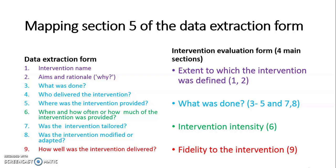We categorised these 9 areas into 4 main sections for our intervention quality assessment instrument. The extent to which the intervention was defined was mapped to items 1 and 2 of the data extraction form. What was done was mapped to items 3 to 5 and 7 and 8. Intervention intensity was mapped to item 6, and fidelity of the intervention was mapped to item 9. Within each of these sections, we had specified specific evaluation questions.